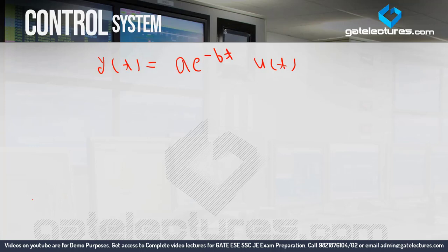Suppose you are given the equation y(t) = A·e^(−bt)·u(t). From this, how will you find the time constant? What you need to do is: whenever an equation is given, look for the e^(minus) term. Find the value of time t for which the e^(minus) term becomes one — that is, when e^(−1) is created. That value of t is your time constant. So if I put t = 1/b here, then e^(−1) is created, so tau = 1/b.